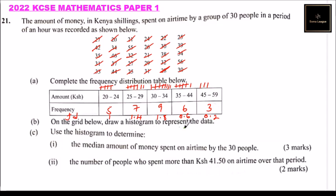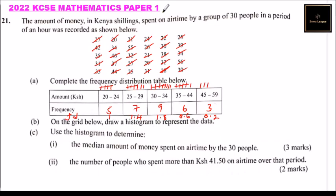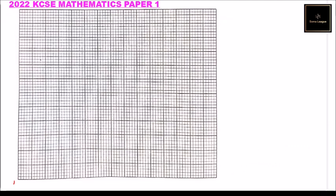On the grid provided we are going to draw the frequency density against the amount spent. On the horizontal axis we use class boundaries: 19.5, 29.5, 39.5, 49.5, and 59.5. This represents the amount in Kenyan shillings.